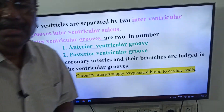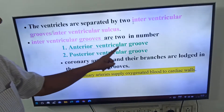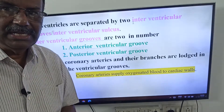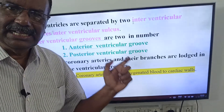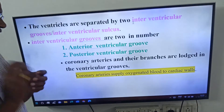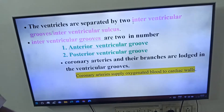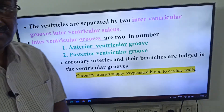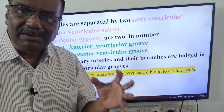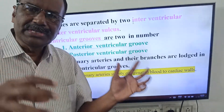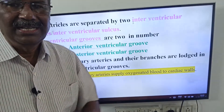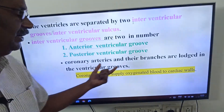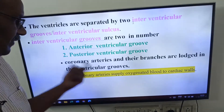We have two interventricular grooves. What are they? The first is the anterior interventricular groove, and the second is the posterior interventricular groove. Very, very important: coronary arteries and their branches are lodged in these interventricular grooves.